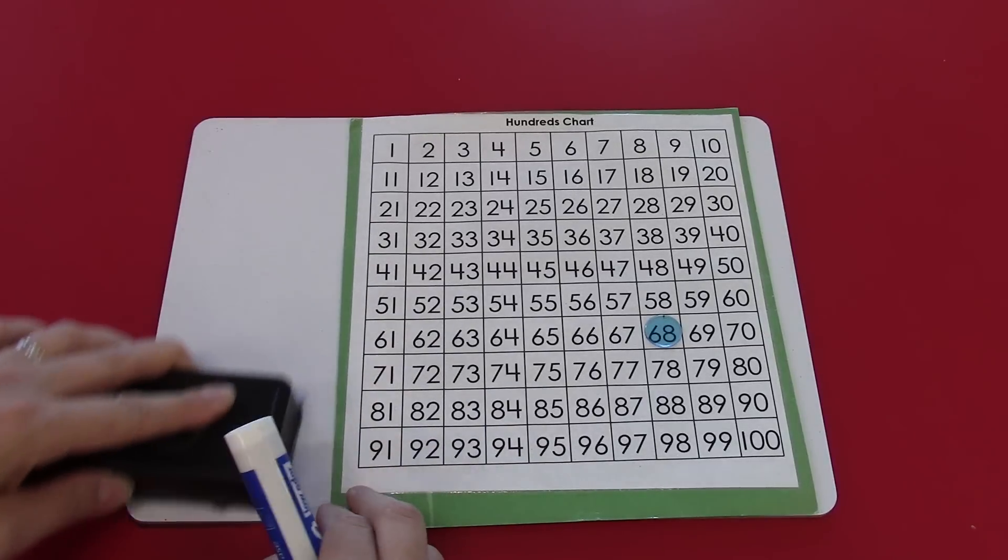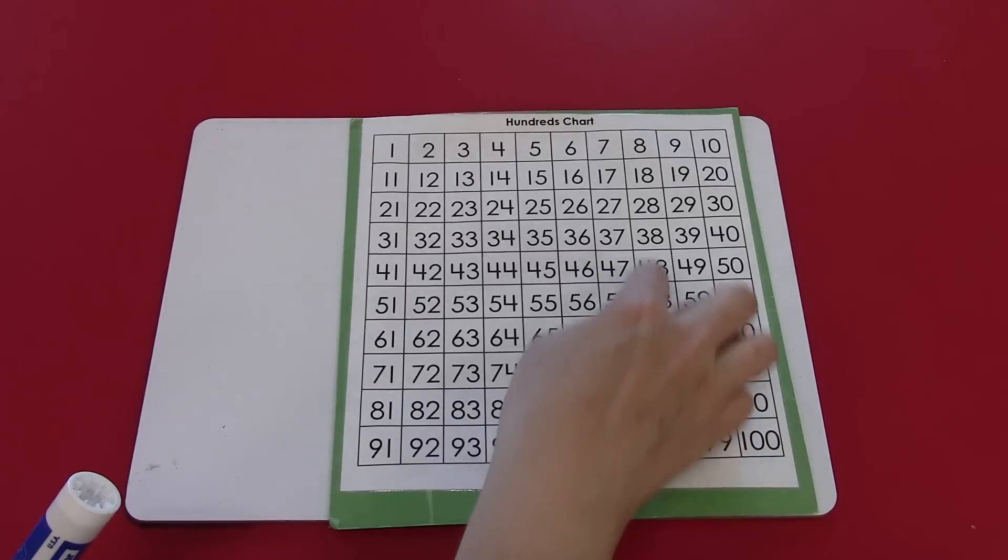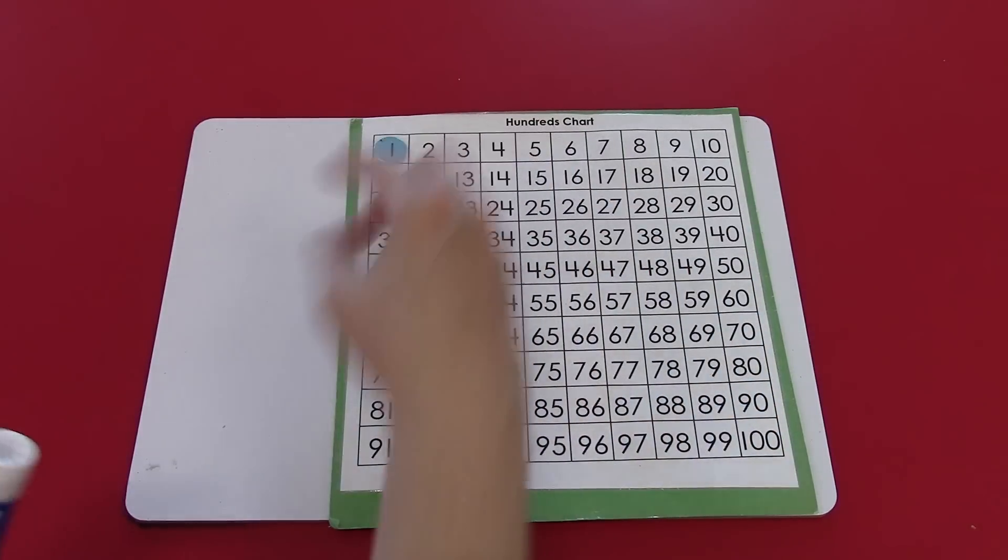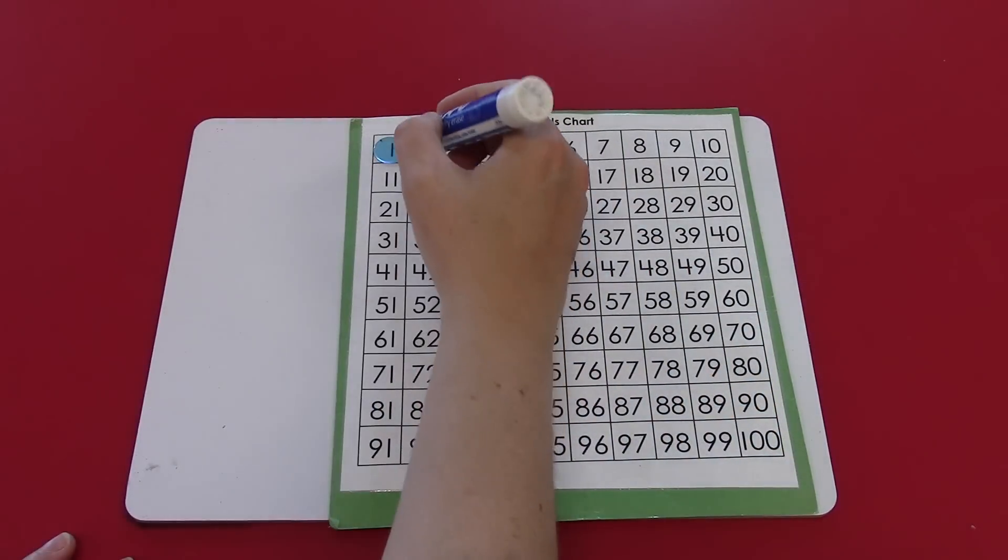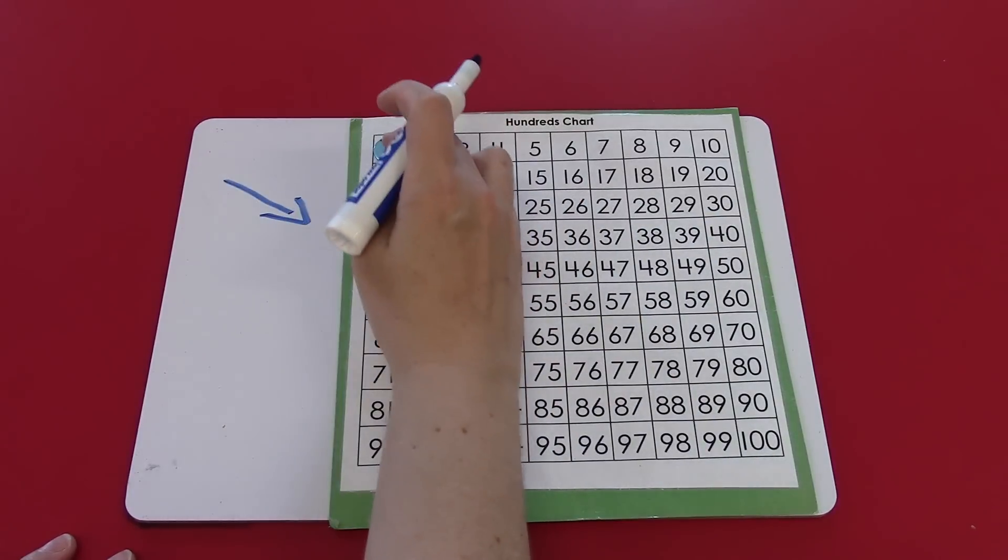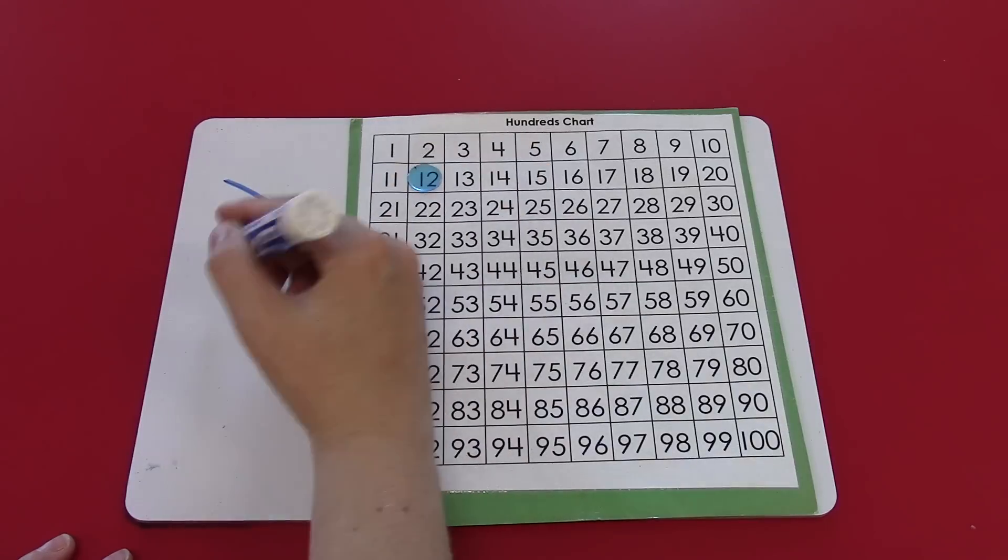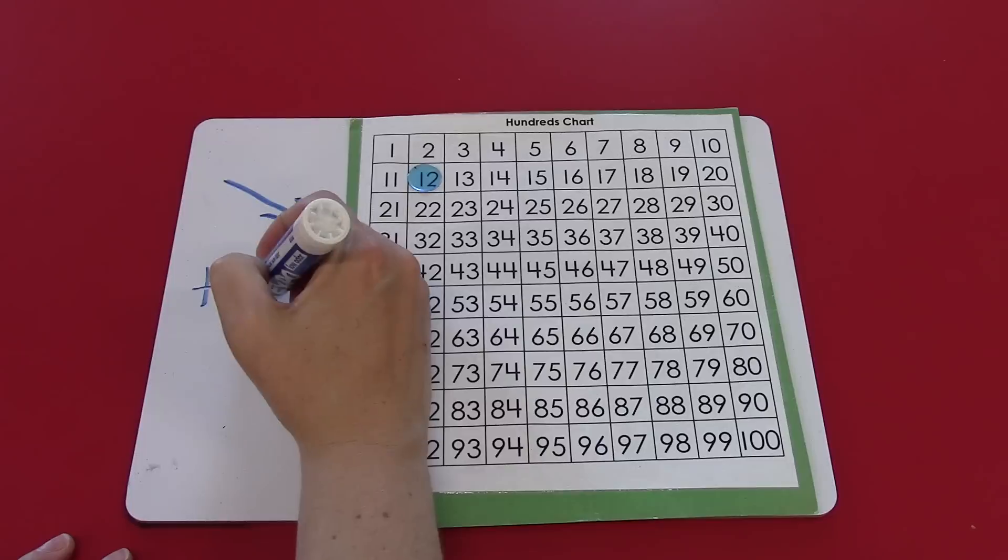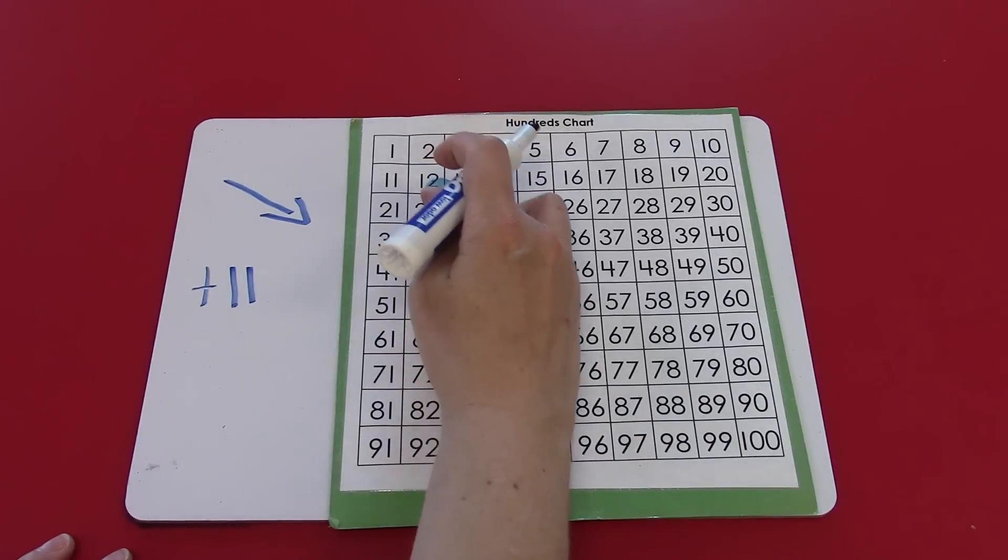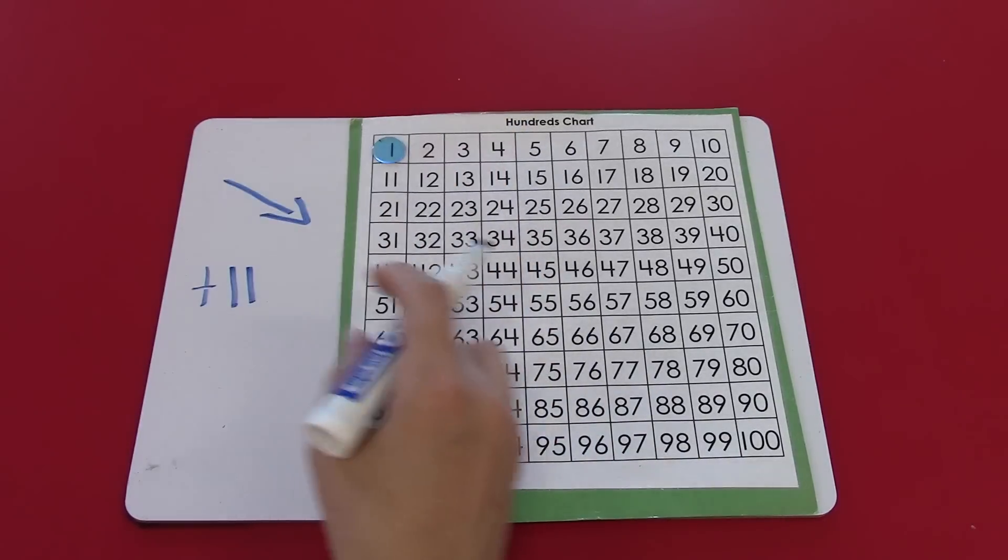I'm going to show you two more things on the hundreds chart to help make adding easier for you. When you go diagonal to the right, it's like adding 10, 11. So anytime you have to add 11, you just have to go diagonal to the right. Let's try one.